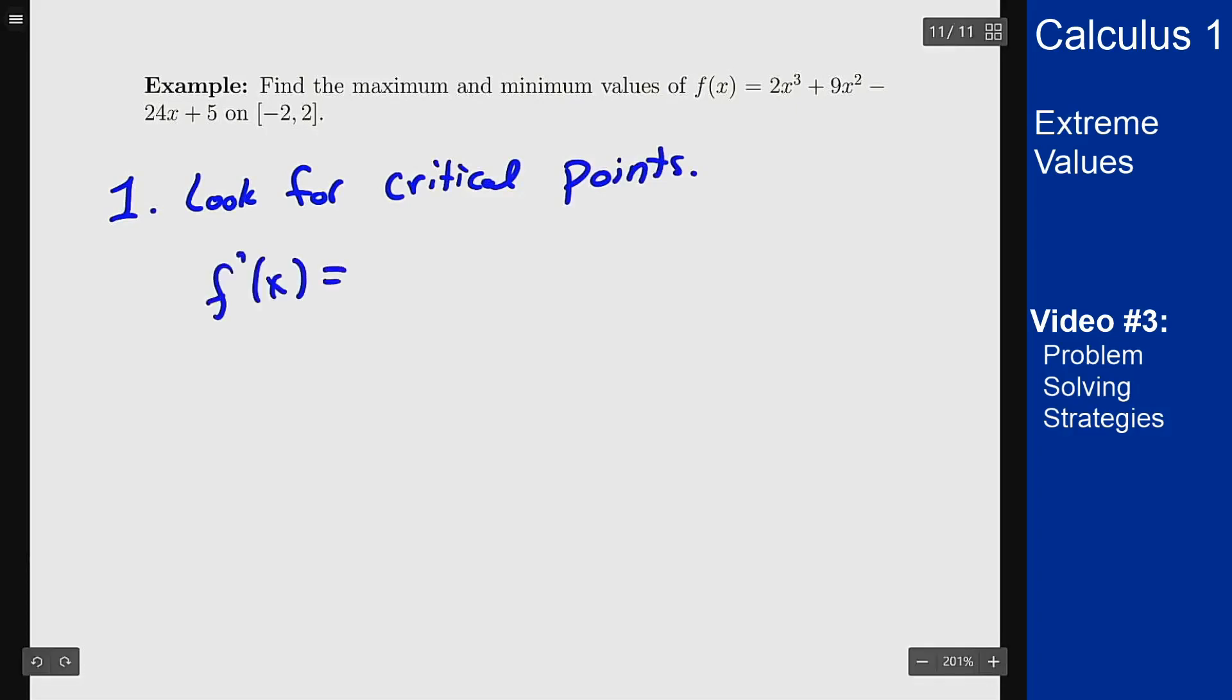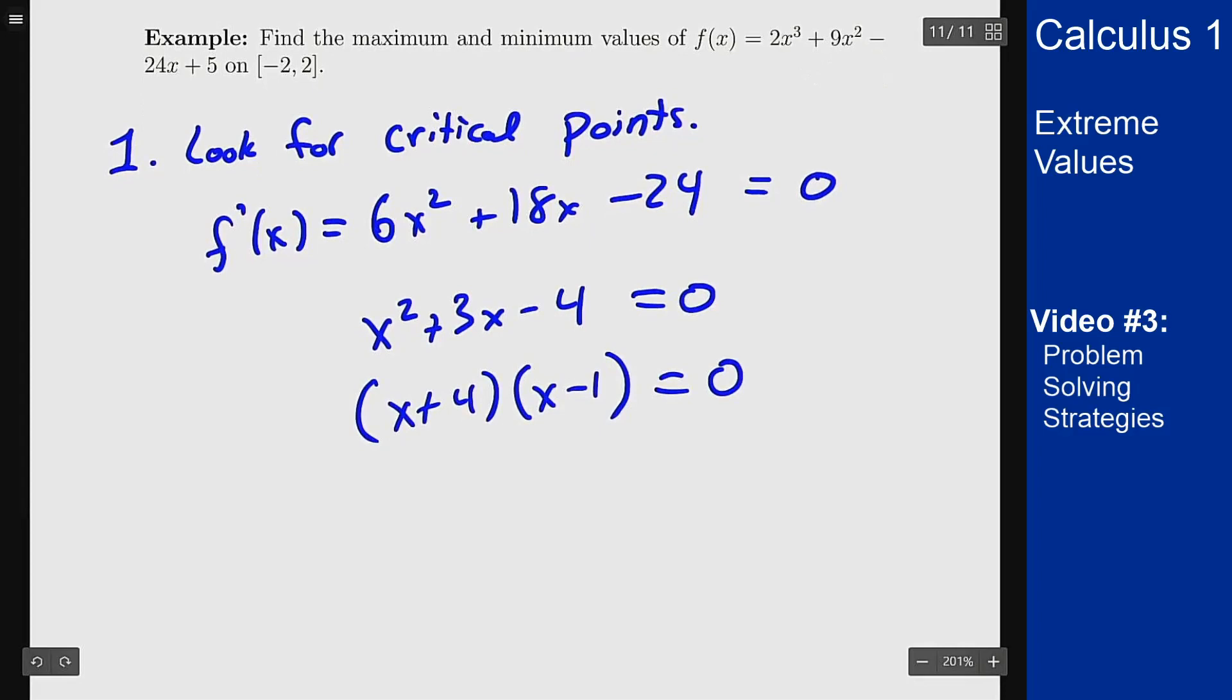My derivative here is going to be f'(x) = 6x² + 18x - 24. That's a polynomial so it always exists but I only care about where it's zero. I want to set this to zero and solve. This is equivalent if I divide everything by 6, I get x² + 3x - 4 = 0 and this factors as (x + 4)(x - 1) = 0. Which means my critical points are x = -4 and x = 1.